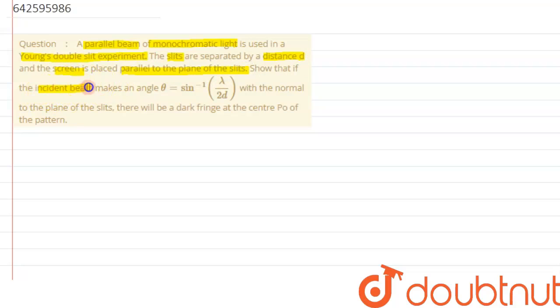We need to show that if the incident beam makes an angle theta equals sine inverse lambda by 2d with the normal to the plane of the slit, there will be a dark fringe at center P₀ of the pattern.